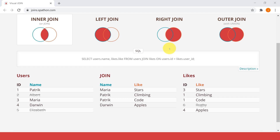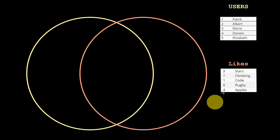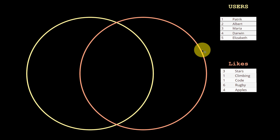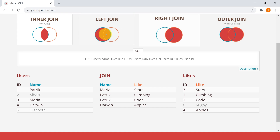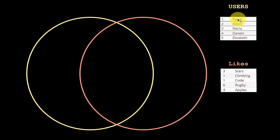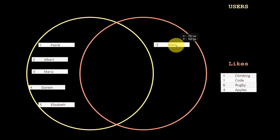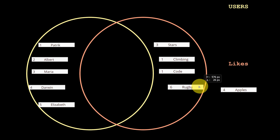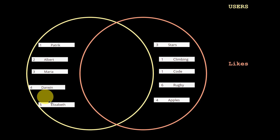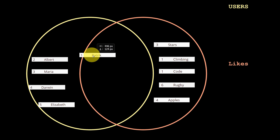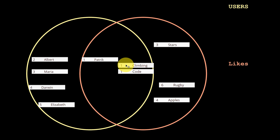We'll use the same example, but let's visualize the venn diagrams a little bit deeper. So now we have two circles. Think of the left circle as the leftmost table, which is the table we're querying from - the users. The right circle is the table that we're joining to, which is likes. So all the users belong in the left circle. What is in the intersection? The intersection contains rows that have the same ID - for example, Patrick likes climbing and coding, so they belong there.